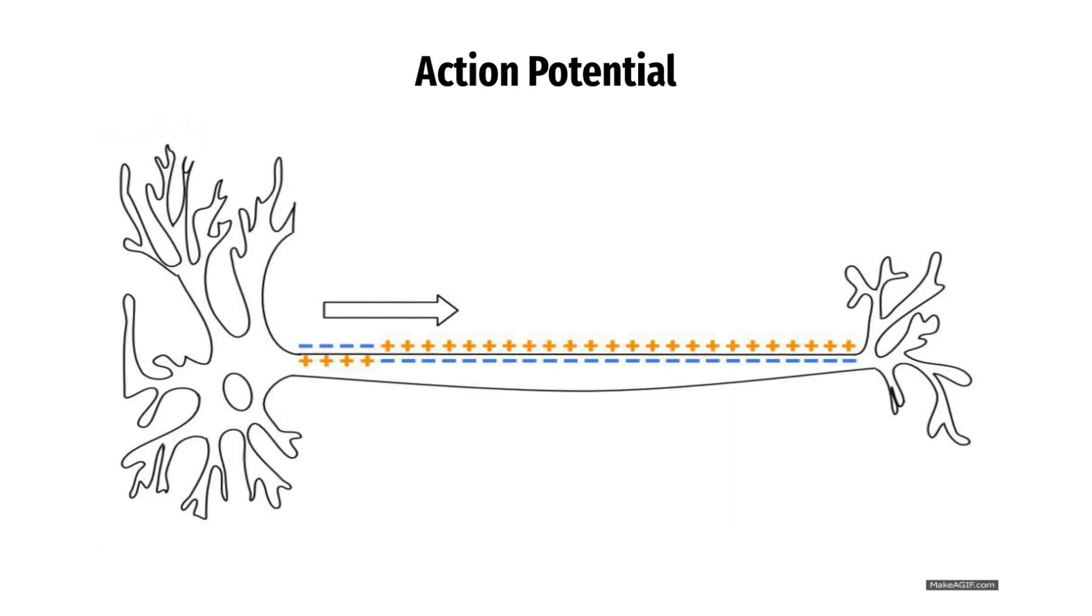The action potential then travels along the axon towards the terminal branches, where it triggers the release of neurotransmitters into the synapse, which is the tiny gap between the sending neuron's axon terminal and the receiving neuron's dendrites.